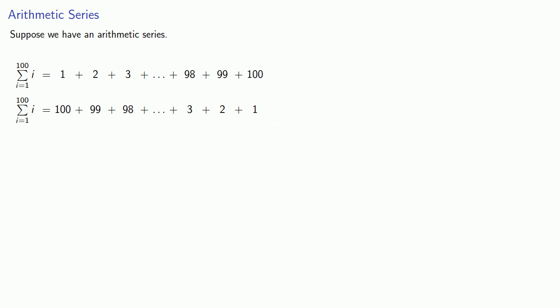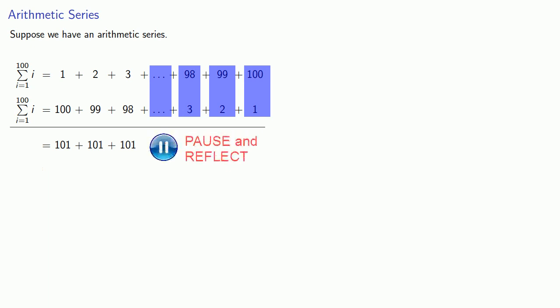Why does reversing the order help us? Well if you notice, if I sum vertically, the sum of these first two terms is 101. And if I sum vertically, the sum of these next two terms is 101. And if I sum these two terms vertically, their sum is 101. And you should convince yourself that the sum of these other vertical pairs of terms will also be 101.